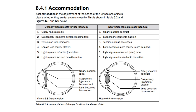Let's start with distant vision. This is for objects that are further than 6 meters away. When an object is further than 6 meters away, the ciliary muscles — this small muscle over here — relax. This causes the suspensory ligaments, the ligament that holds the lens, to become taut and therefore tighten.